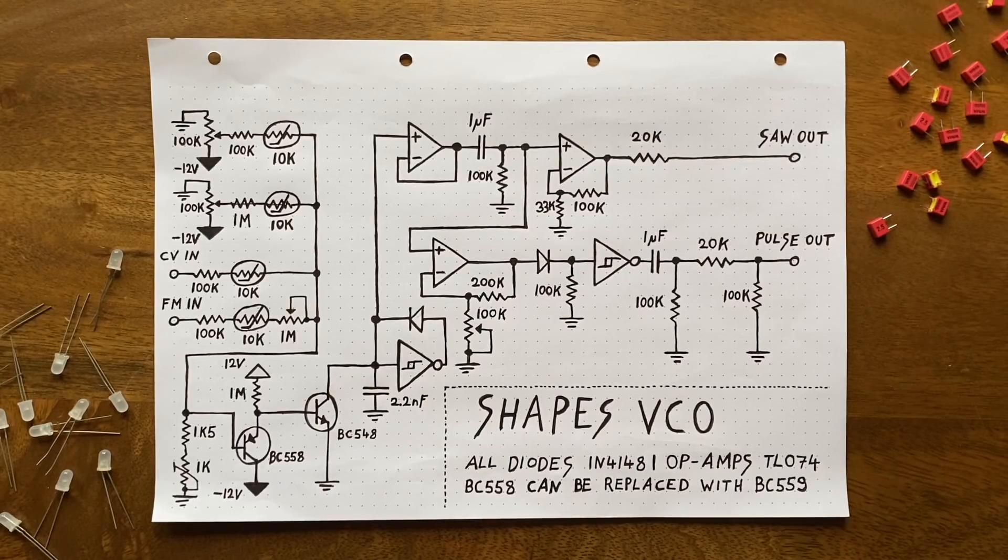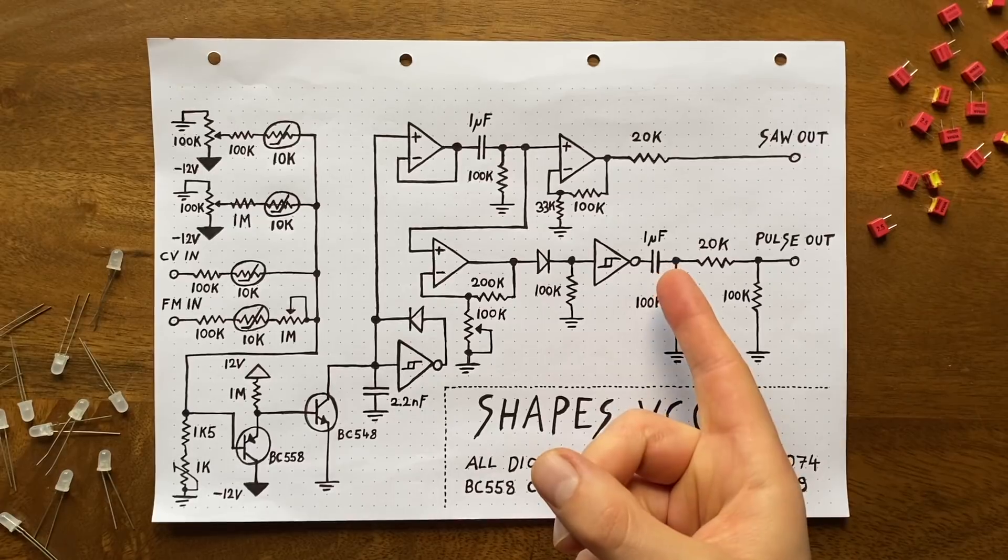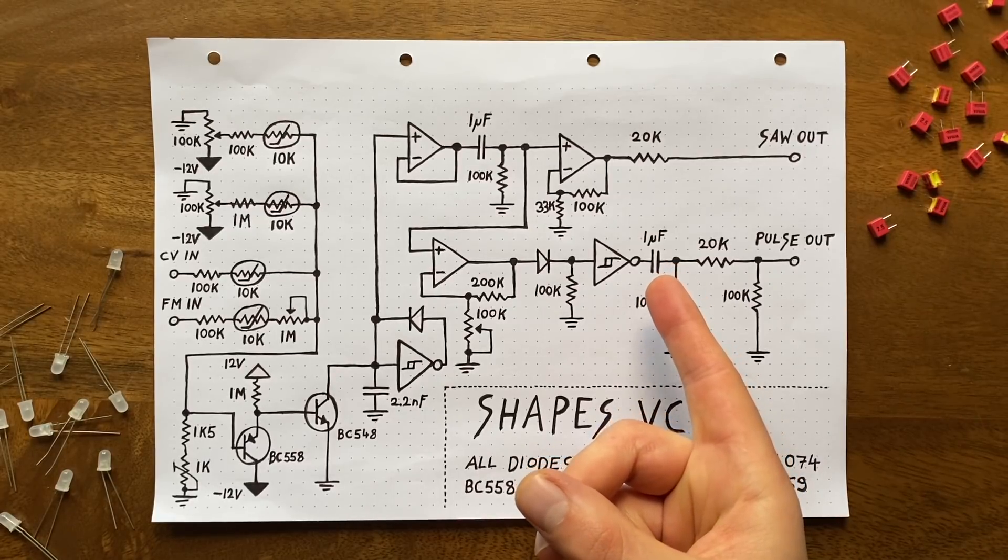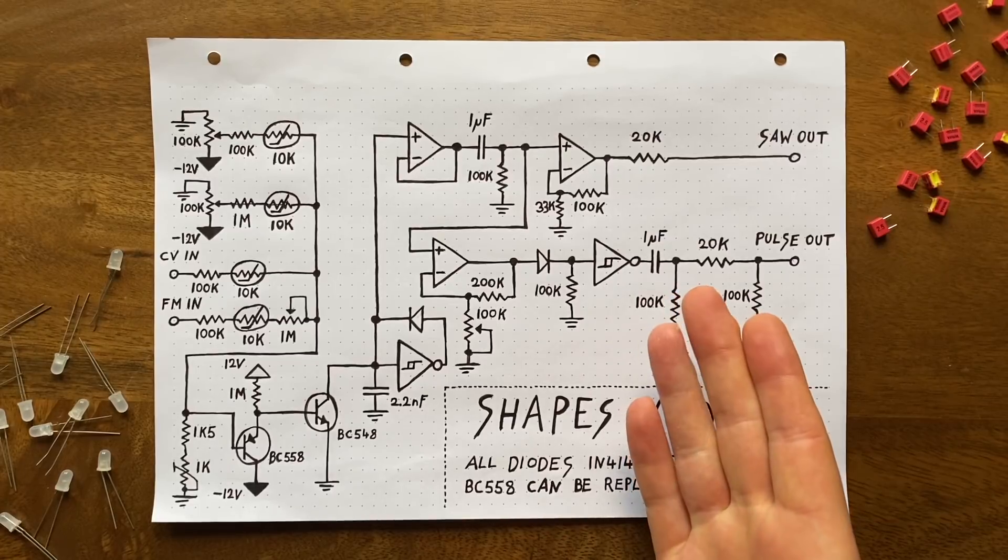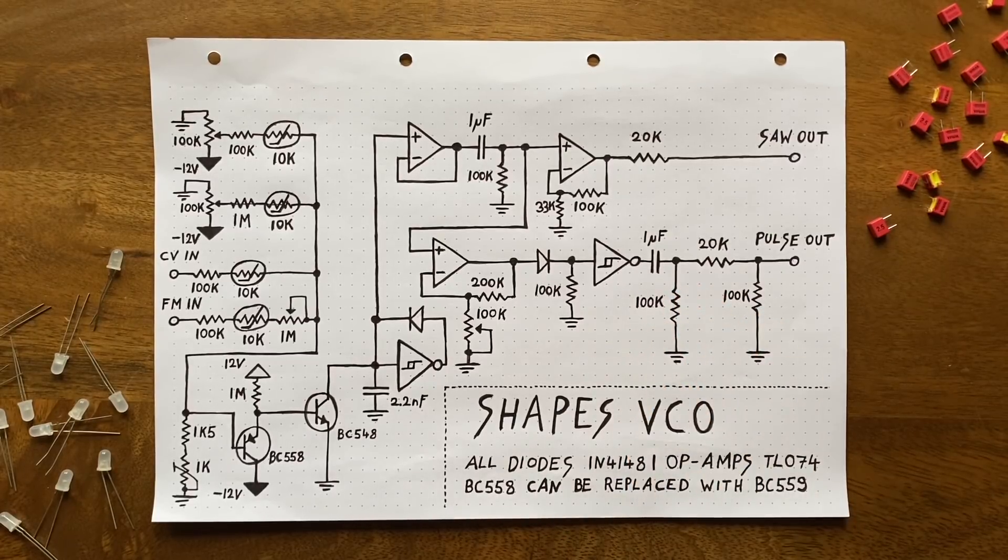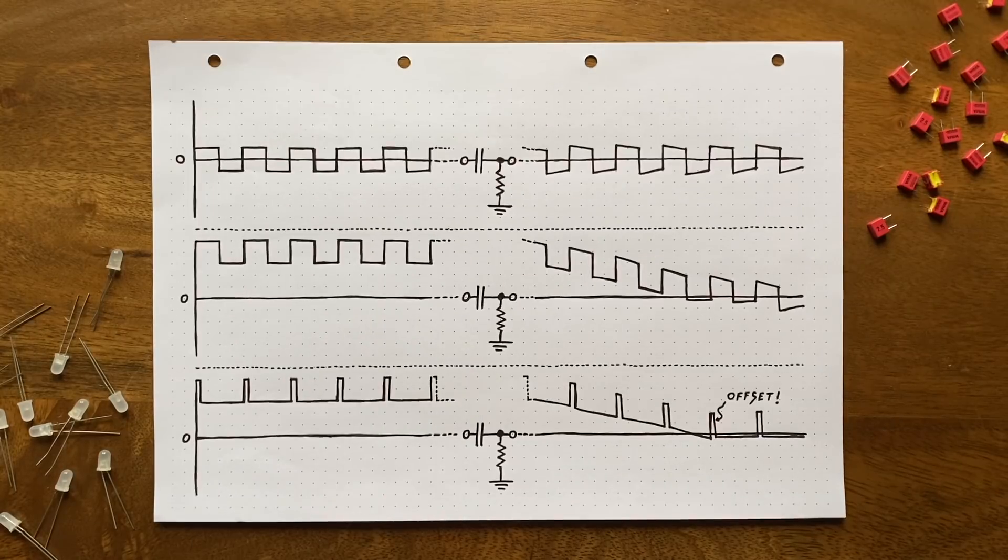Okay, so how does this happen? Did I forget to add AC coupling to the square wave output? No, it's actually right here. A one microfarad capacitor paired with a 100k resistor to ground. Then how come it's not doing its job? Shouldn't this eliminate any DC offset from our signal? Well, as it turns out, AC coupling is not a one-size-fits-all solution.